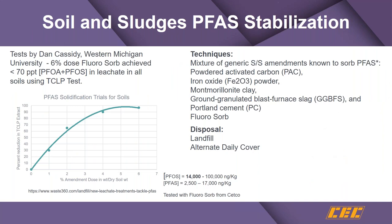We've been working with Dan Cassidy at the University of Western Michigan on stabilization of materials. For Fluorosorb PFAS removal when the media gets completely used up, we've been looking at solidification with 2 to 6 percent weight-by-weight of a cementitious product to get below TCLP constituent levels. We look at 70 parts per trillion as a level for PFOA and PFOS in expended Fluorosorb modified bentonite — it has a great ability to be solidified to prevent leaching of PFAS constituents.